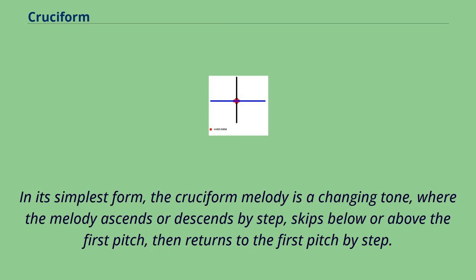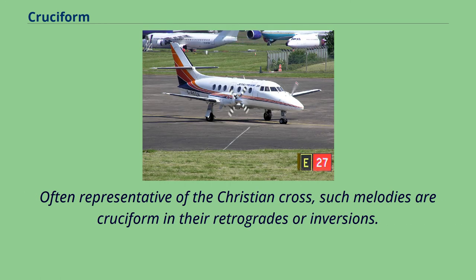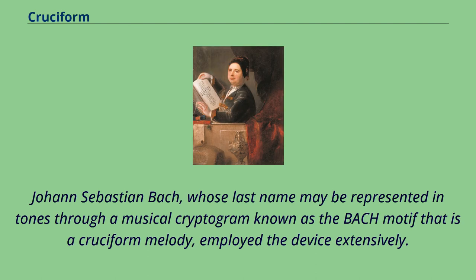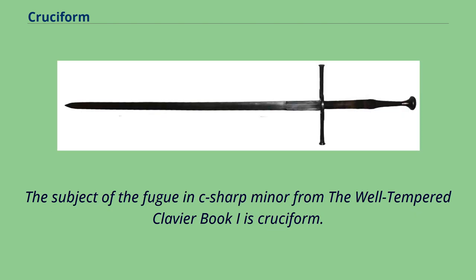In its simplest form, the cruciform melody is a changing tone, where the melody ascends or descends by step, skips below or above the first pitch, then returns to the first pitch by step. Often representative of the Christian cross, such melodies are cruciform in their retrogrades or inversions. Johann Sebastian Bach, whose last name may be represented in tones through a musical cryptogram known as the Bach motif — a cruciform melody — employed the device extensively. The subject of the fugue in C-sharp minor from the Well-Tempered Clavier Book I is cruciform.